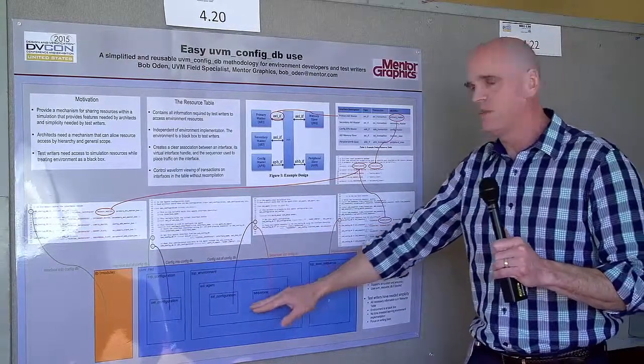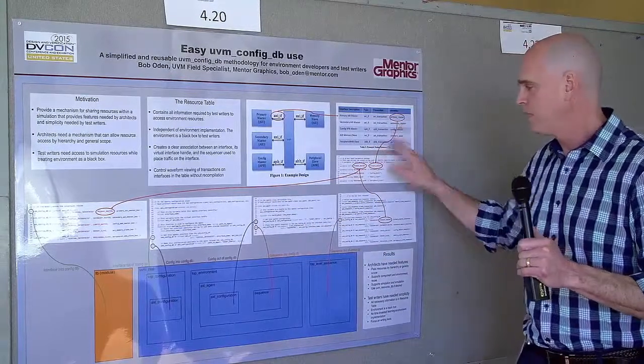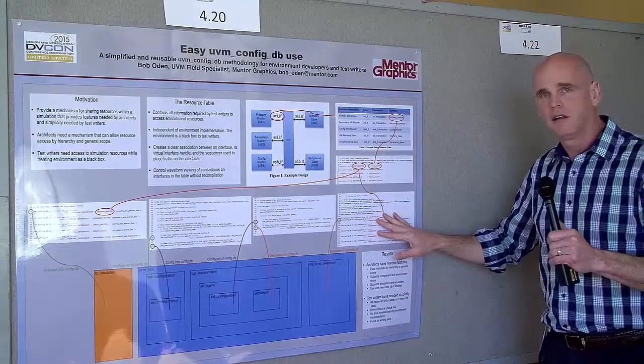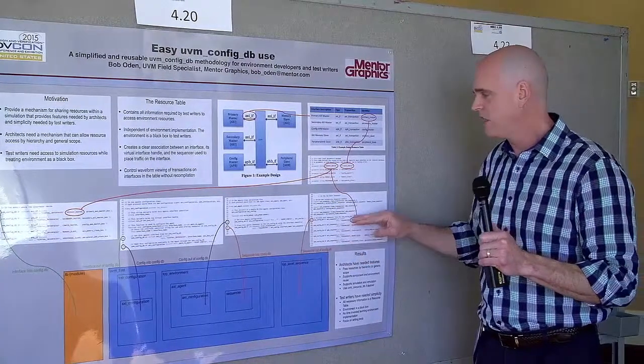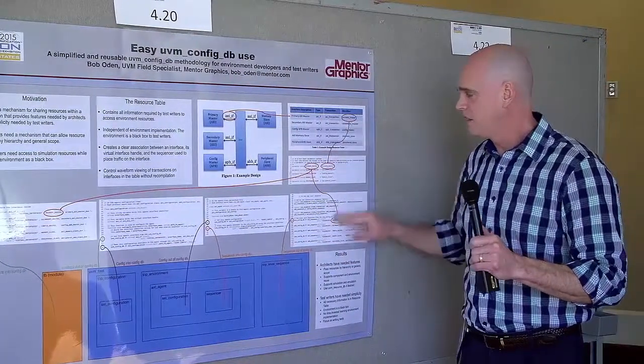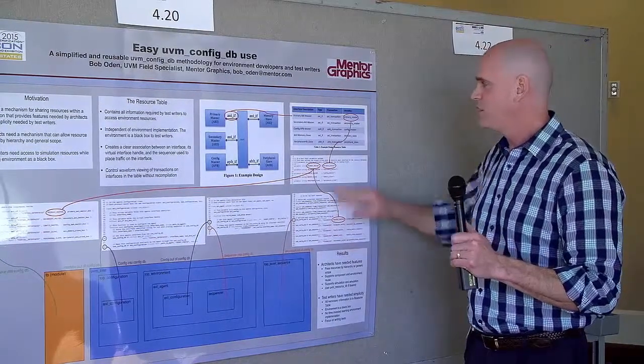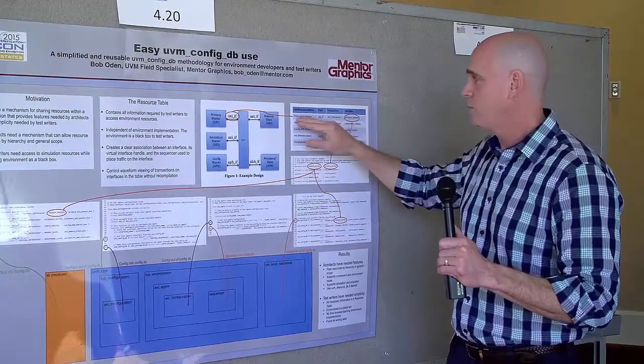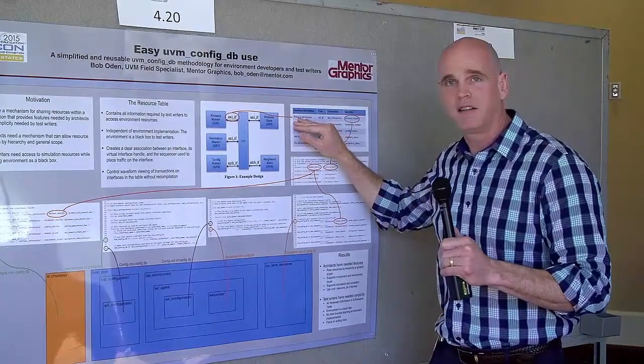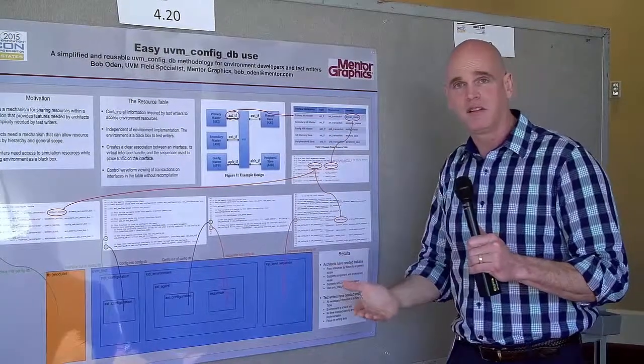Once the sequencer is placed into the config database using that unique identifier, then the test writer, when creating sequences, identifies a sequencer that is needed to put traffic on that bus. The test writer can then go to the table and if he wants to put traffic on the primary AXI master, the scope is null sequencers,